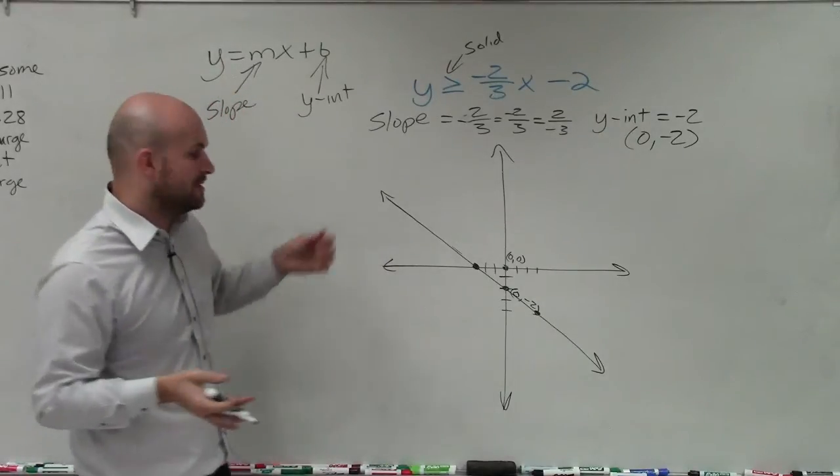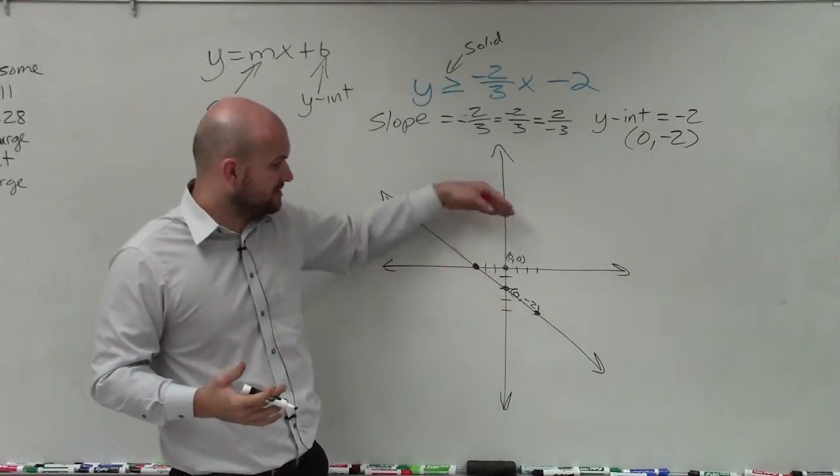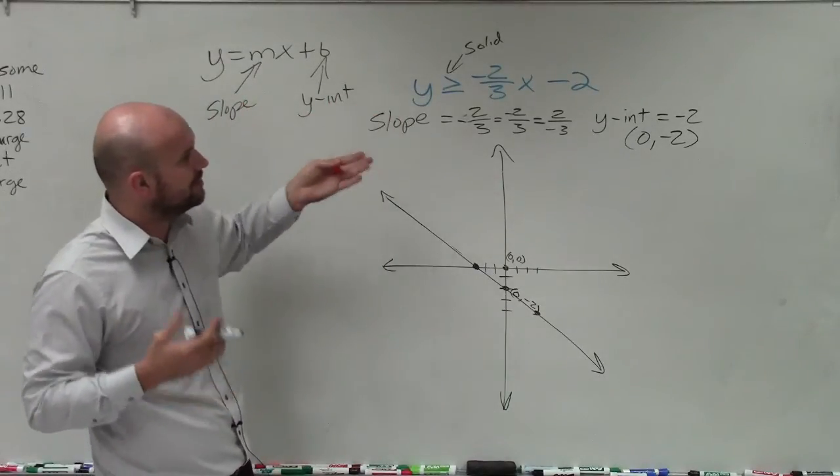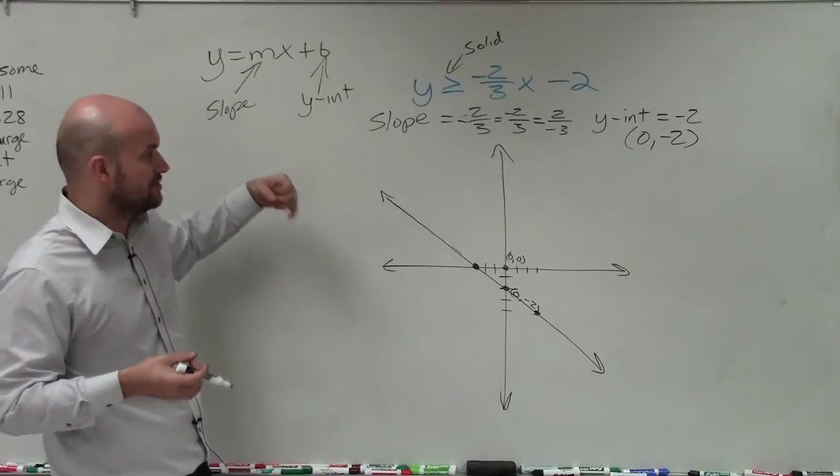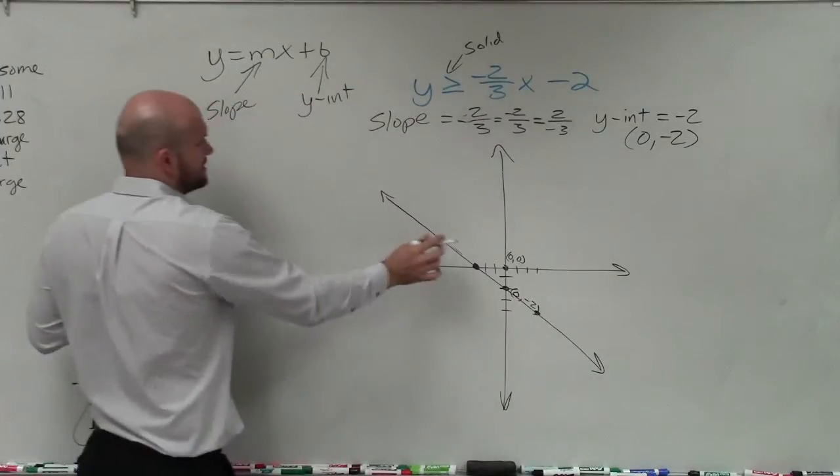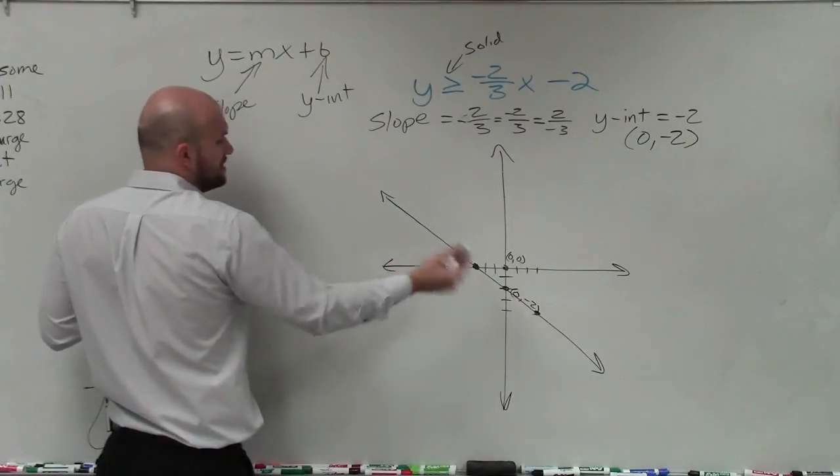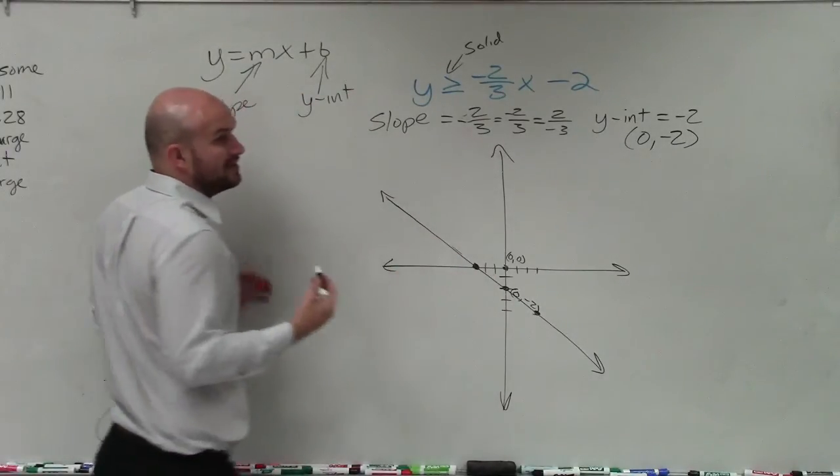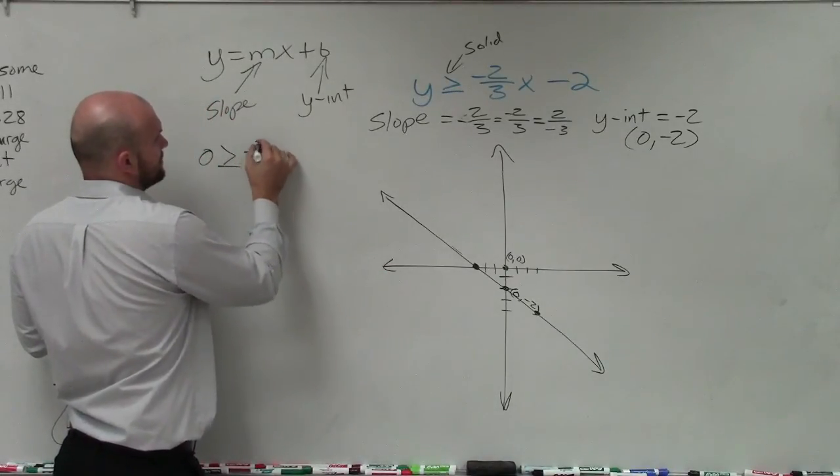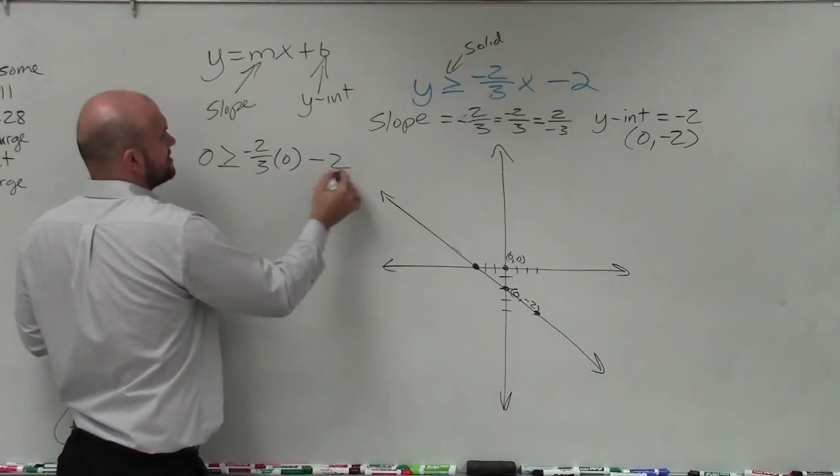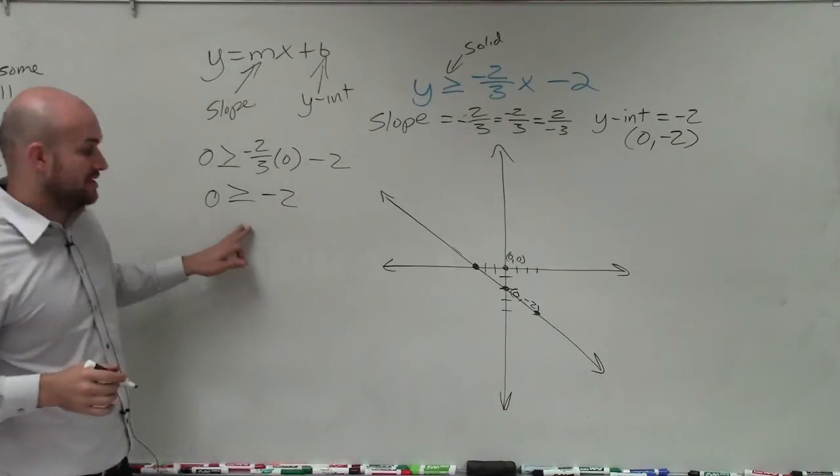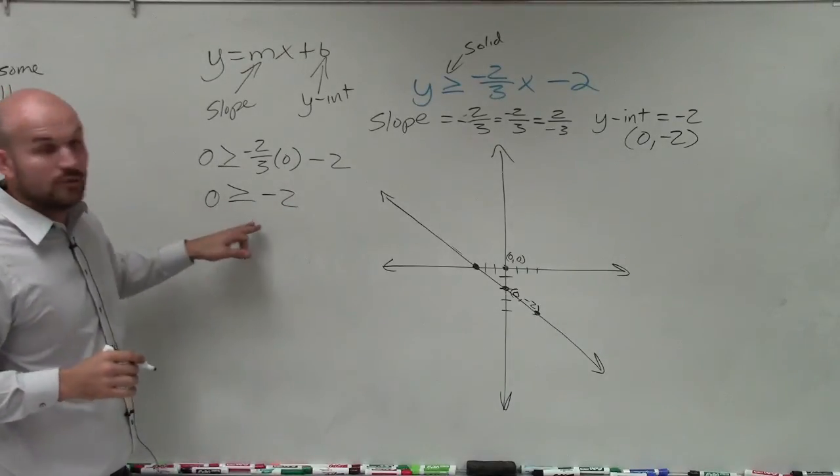Now the last thing we want to do is determine, well, we know the points on the line are true, but what about the points above and below the line? Because it's an inequality. It's saying for all these values, y is greater than or equal to all values for negative two-thirds x minus 2. So now we need to test that. We're going to test the origin, but you don't have to use the origin. You can use any point that does not lie on the line. But usually using 0, 0 is going to be your easiest to test, because anything times 0 is always 0. So therefore, I just have 0 is greater than or equal to negative 2, which is false.